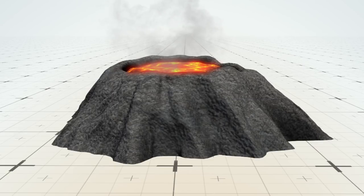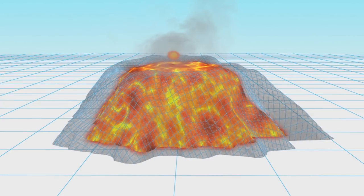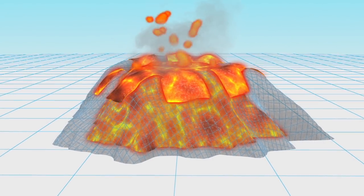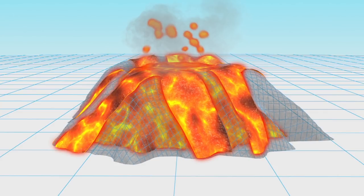Lava domes are created when small masses of thick lava can't flow far from the source, so domes pile up around the vent. The dome grows by expansion of lava from within, and the mountain forms from material spilling off the sides of the dome.